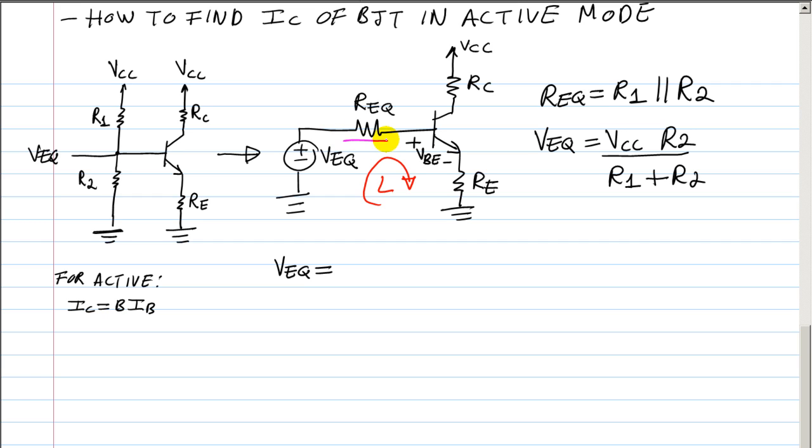The current here at the base is simply IB. So that's how we are going to get our voltage here. That's going to be IB times REQ plus your VBE.